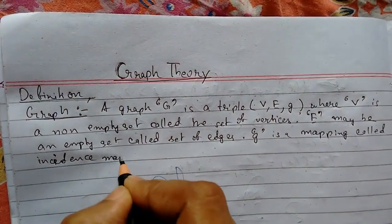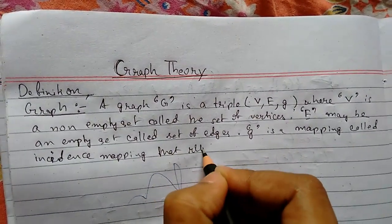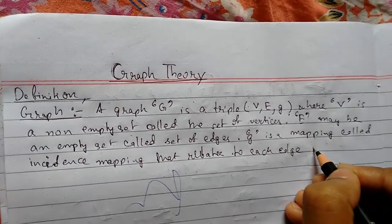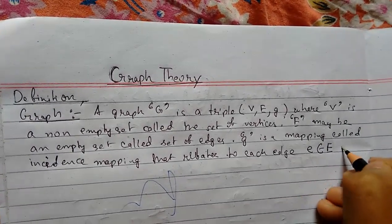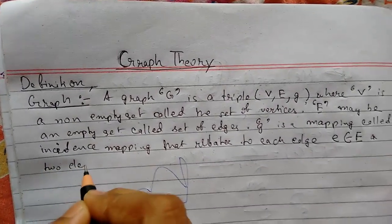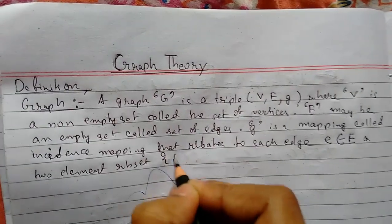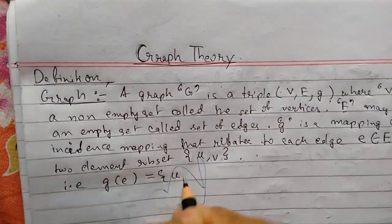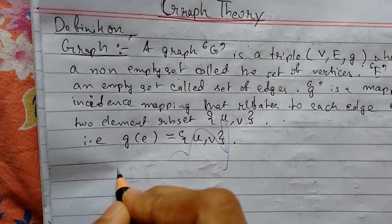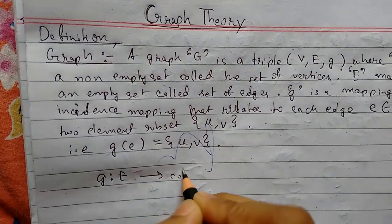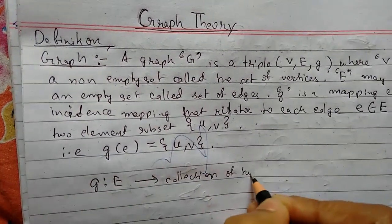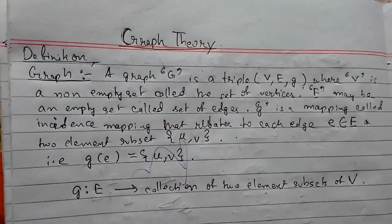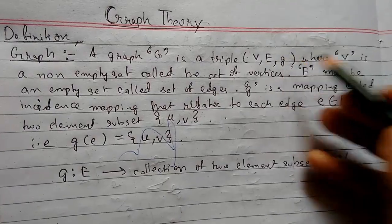The incidence mapping relates to each edge E a two-element subset U comma V, so G of E is U comma V. G maps E to a collection of two-element subsets of vertices V. This was the mathematical definition. In most cases, G will be absent.